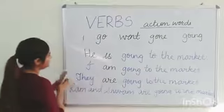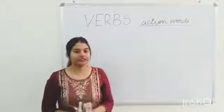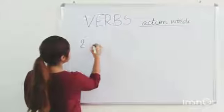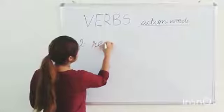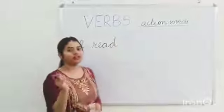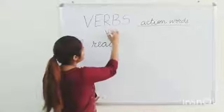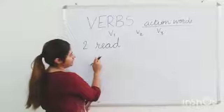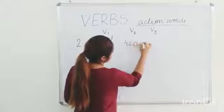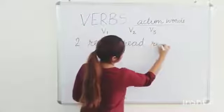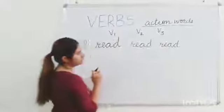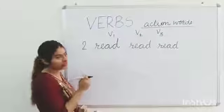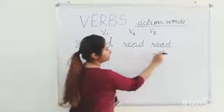Let's take another example now. We will learn another interesting verb form. The second verb we have is 'read'. Do you know what are the three verb forms of read — V1, V2, V3? I have written the same words, but how do we pronounce them? Read, read, read.